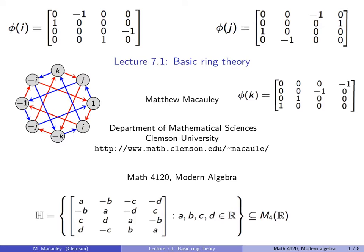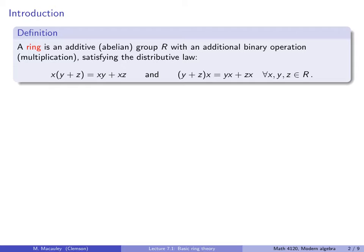Let's start with the definition. A ring is an additive, and hence abelian, group R with an additional binary operation — multiplication — satisfying the distributive law, which ties these operations together. This says that x(y+z) = xy + xz and (y+z)x = yx + zx, and this holds for all x, y, and z in the ring.